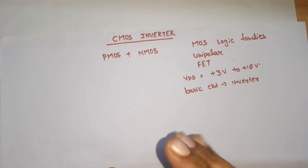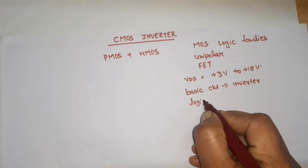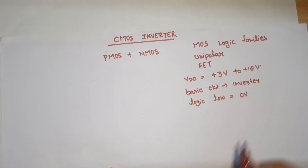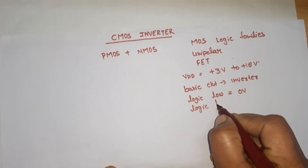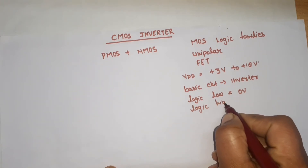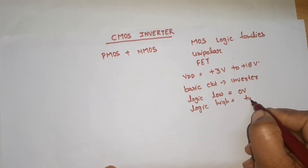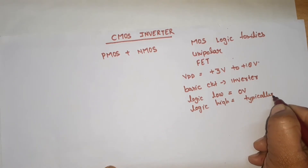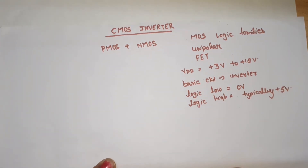One more thing I want to discuss: when we talk about logic low, the voltage is 0. And for logic high — meaning binary bit 1 — the voltage is typically plus 5 volts. Now I am going to draw the circuit diagram for the CMOS inverter.